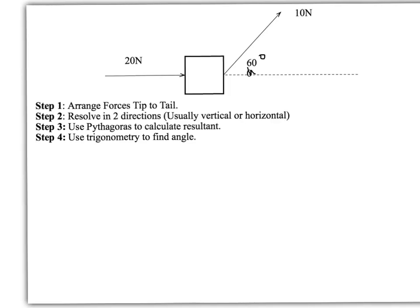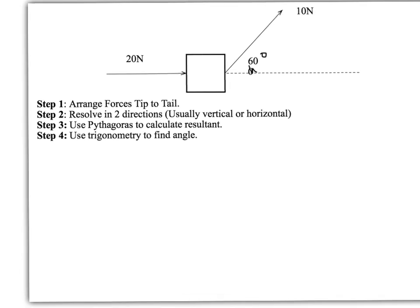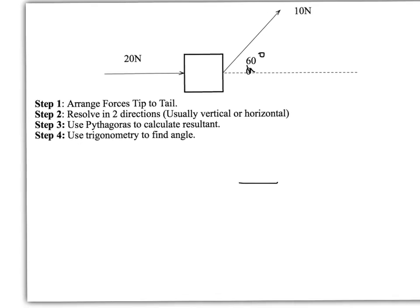Let's get to our example. Step one: arrange forces tip to tail. We've got this 20N one going across here. You can do these either way around, it won't affect the answer. And then we've got 10N. That means our resultant, which I'm going to call R, will be going from the tail of 20 all the way up to the tip of the 10. And we've got a 60 degree angle in there.